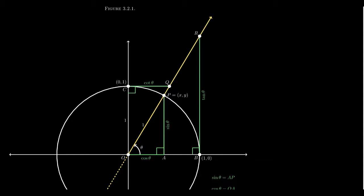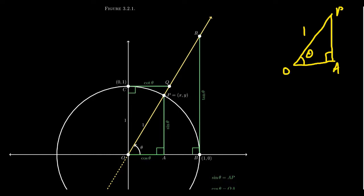Pulling the triangle out to avoid clutter: triangle OAP has angle theta at O, a right angle at A, and hypotenuse of length one. The opposite side is sine theta, and the adjacent side is cosine theta. This we know from our previous unit circle discussion.